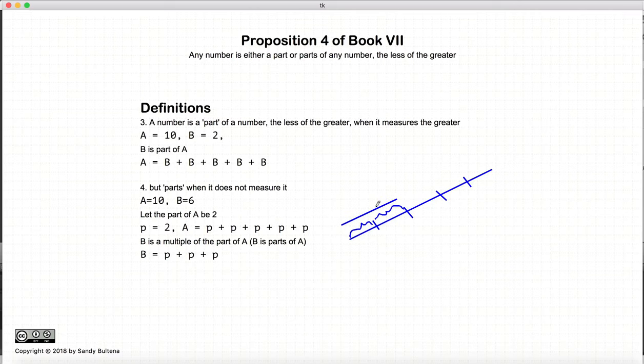And B will be equal to a multitude of these parts. So, although B does not measure A, it is composed of parts of A. So, again, if A is equal to 10, and B is equal to 6, then if we let the part of A be equal to 2, then A is measured by 2, and B is also measured by 2. So, it is composed of a multitude of the parts of A. So, that is the distinction between part and parts.